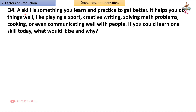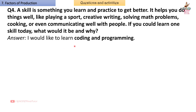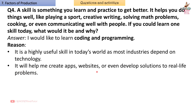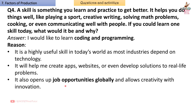Question 4: A skill is something you learn and practice to get better — like playing a sport, creative writing, solving math problems, cooking, or communicating well with people. If you could learn one skill today, what would it be and why? Answer: I would like to learn coding and programming. It is a highly useful skill in today's world as most industries depend on technology. It will help me create apps, websites, or develop solutions to real-life problems. It also opens up job opportunities globally and allows creativity with innovation.